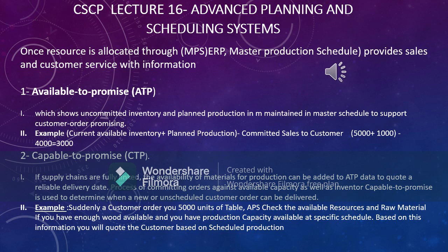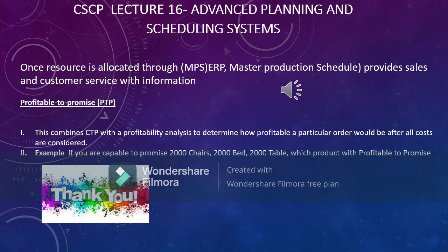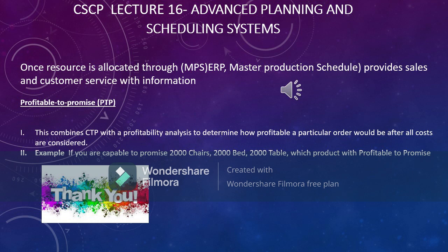The third information APS provides is Profitable to Promise. For example, if you are selling ten items, the APS has all the information — costs, capacity, everything. It tells the sales team which specific products — like a table, chair, bed, or dining table — are more profitable, so you know which products give you more profit.